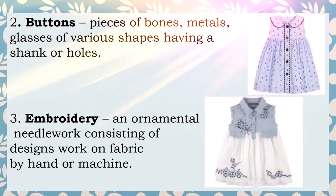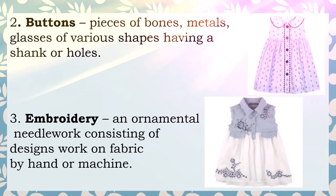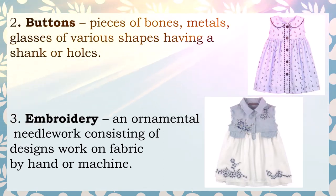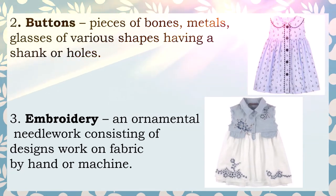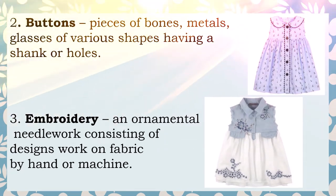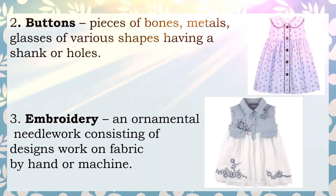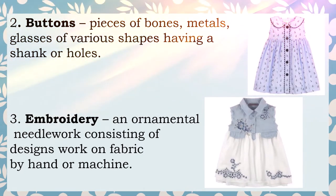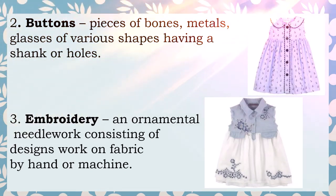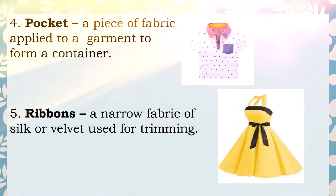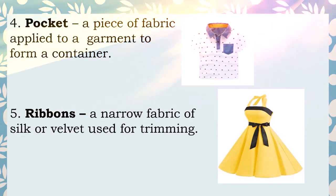Second trimming is buttons — pieces of bone or metal of various shapes having holes. As you can see from the example of the children's wear, there are drop-down button designs. Next, number three is embroidery: an ornamental needlework consisting of designs worked on fabric by hand or by machine. Number four is the pocket — a piece of fabric applied to a garment to form a container.